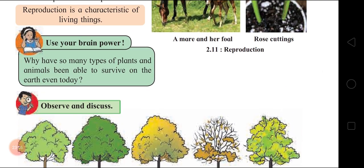Why have so many types of plants and animals been able to survive on the Earth even today? All the types of plants and animals perform the process of reproduction continuously. That is why they have survived. If the reproduction characteristic is not there, you will not find any living things - plants and animals - here on the Earth.